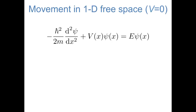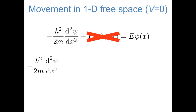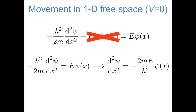Before we look at the particle in a box, I want to look at a slightly simpler situation: the movement of an object in one-dimensional free space, where the potential energy operator V equals zero everywhere. If we look at the one-dimensional Schrödinger equation and set V equal to zero, we can ignore the second term and rewrite our equation as the kinetic energy operator applied to psi equals E psi. Rearranging, we're left with the second derivative of psi equal to a negative group of constants times psi.